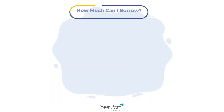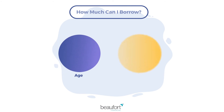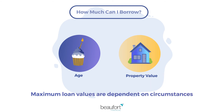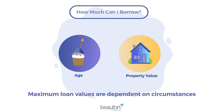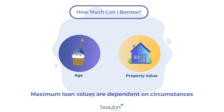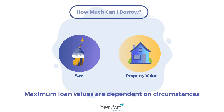Another common question is how much can I or we borrow? Schemes vary, and there are various factors which dictate the maximum loan. Your age or ages and your property value are the most important factors. The older you are, the more you can borrow. Generally the maximum is 50% of the property value, but most of the time it will be lower.